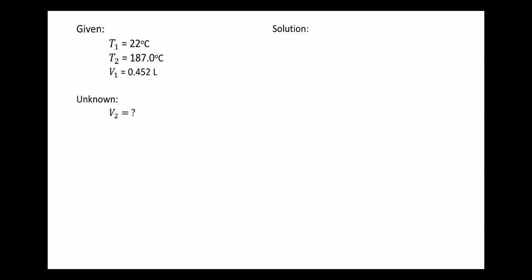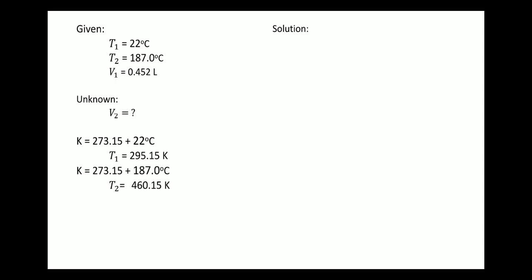First, convert Celsius to Kelvin. For T1, 273.15 plus 22 degrees Celsius is equal to 295.15 Kelvin. And for T2, 273.15 plus 187 gives T2 equal to 460.15 Kelvin.